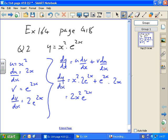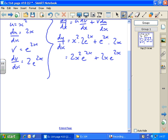plus 2x e to the 2x. If you look at this, I can take 2x e to the 2x outside the bracket and factorise it, meaning x plus 1 inside the bracket.